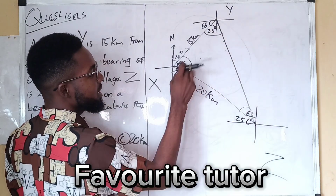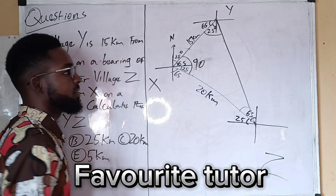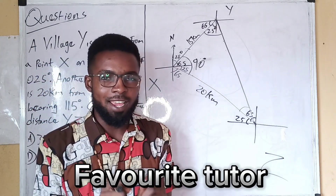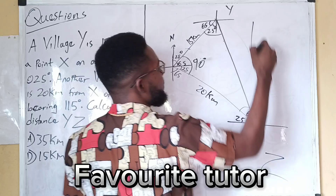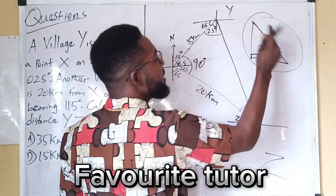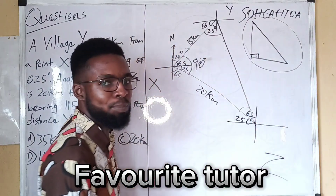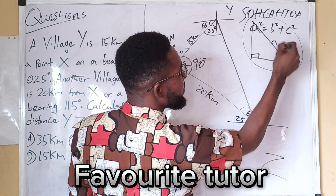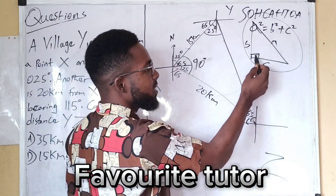This is a triangle and we are taking the interior angles. To get the interior angle here: 65 plus 25 equals 90 degrees. Anytime you are solving questions on bearing and one of the interior angles of the triangle is 90 degrees, it is a right angle triangle. We evaluate a right angle triangle either using trig functions or using Pythagoras theorem: a² = b² + c², where a is the longer side.